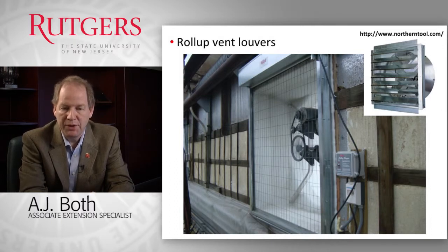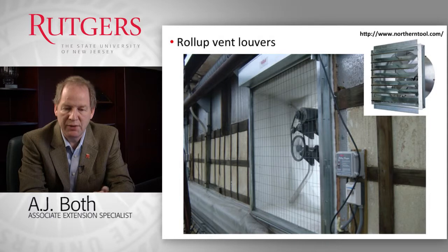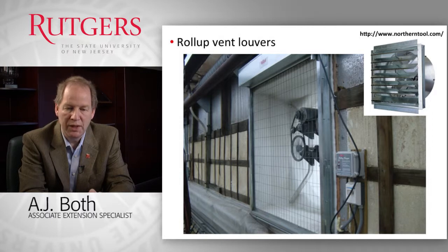Some growers are very concerned about air infiltration heat loss. An example shows a grower who installed a louvered roll-up system in front of the ventilation fan opening to prevent or reduce infiltration heat loss. The upper right image shows a conventional fan installation with inside louvers; the larger image shows the roll-up system creating a good airtight seal when the fan is not operating, thereby reducing infiltration heat loss.